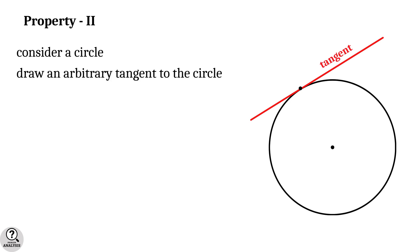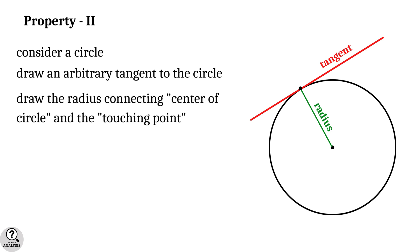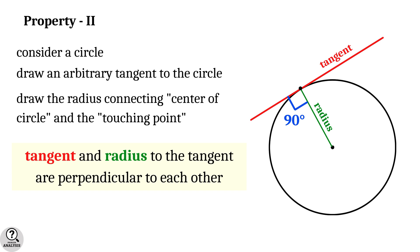Now property 2. Consider a circle and draw an arbitrary tangent to the circle. Now draw the radius connecting the center of the circle and the touching point of the tangent. Then the fact is, tangent and radius to the tangent are perpendicular to each other.